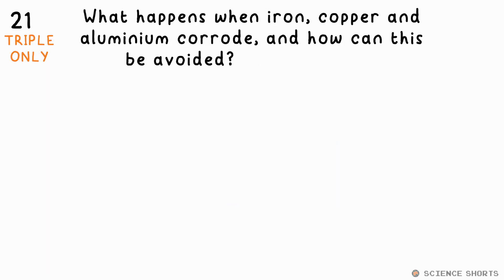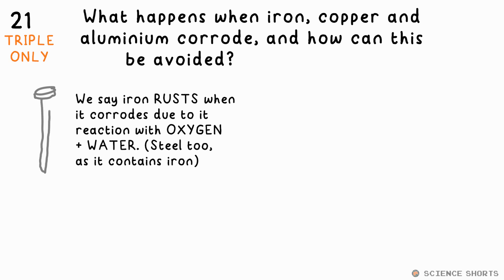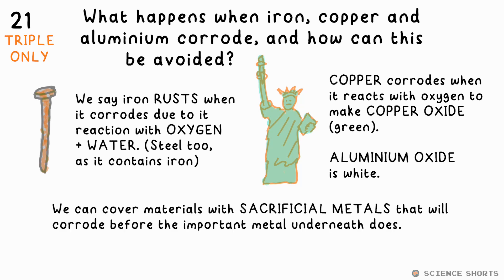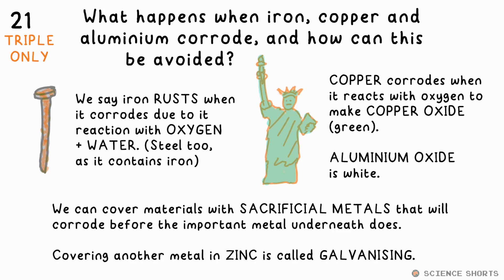What happens when iron, copper, and aluminium corrode, and how can this be avoided? Iron corrodes when it reacts with oxygen in water — also called rusting — making iron oxide, which is brown. Copper reacts with oxygen making copper oxide, which is green. Similarly, aluminium oxide is white. Using a sacrificial metal that's more reactive can reduce corrosion, as it corrodes before the metal it's protecting. Zinc is an example — we call doing this with zinc galvanizing.